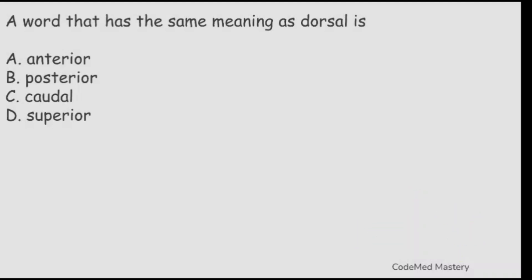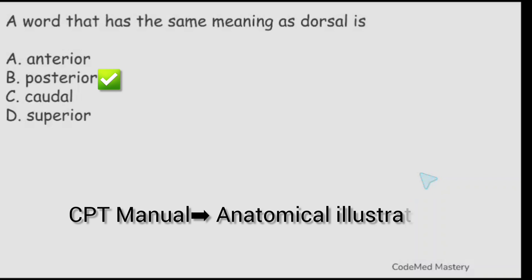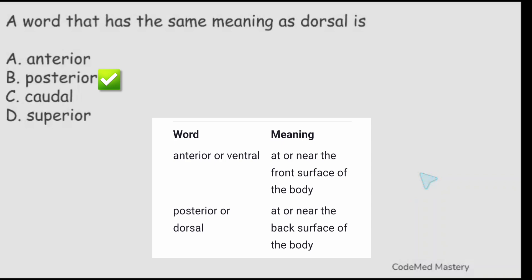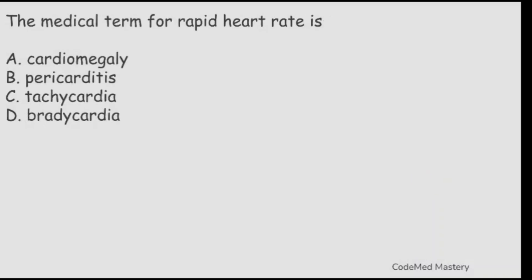A word that has the same meaning as dorsal is: option A: anterior. Option B: posterior. Option C: caudal. Option D: superior. The right answer is option B, posterior. In your exam, if you get confused you can check your CPT book in the illustrated anatomical and procedural review section, which lists prefixes, suffixes and roots — there you can find that posterior and dorsal mean the same thing.